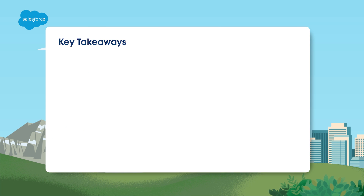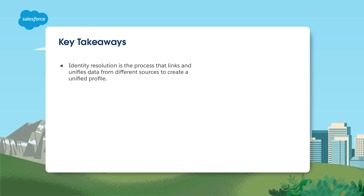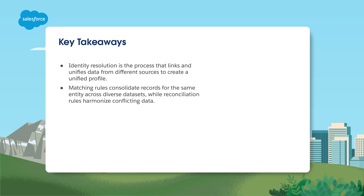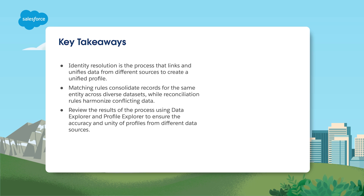Identity resolution is all about bringing data together from different sources to form one unified profile. Matching rules help merge records for the same person, while reconciliation rules remove any conflicts in the data. The results of the identity resolution process can be examined using Data Explorer and Profile Explorer to make sure the profiles from different sources look consistent. To learn more, be sure to check out our other videos. You can also search for topics in Salesforce Help or come join us on the trail at trailhead.salesforce.com.